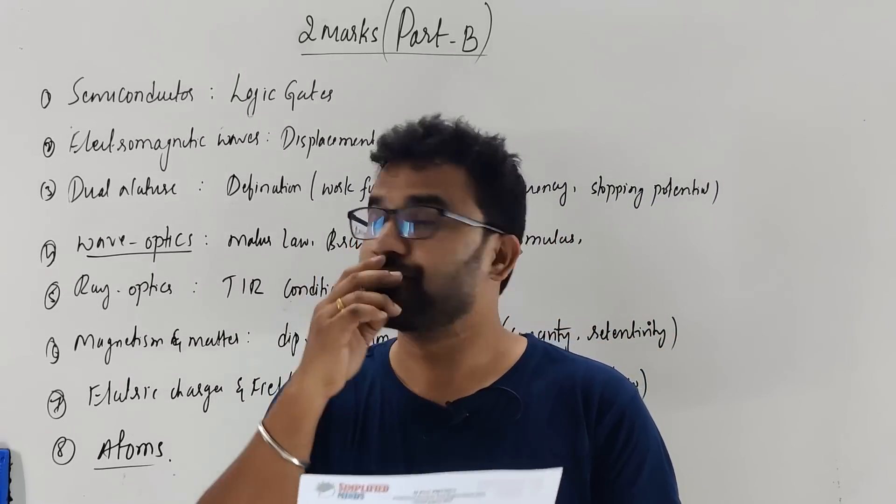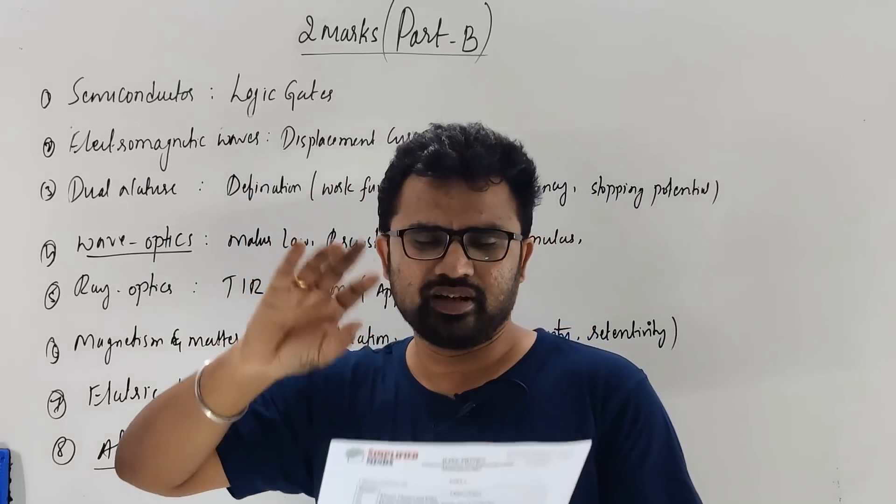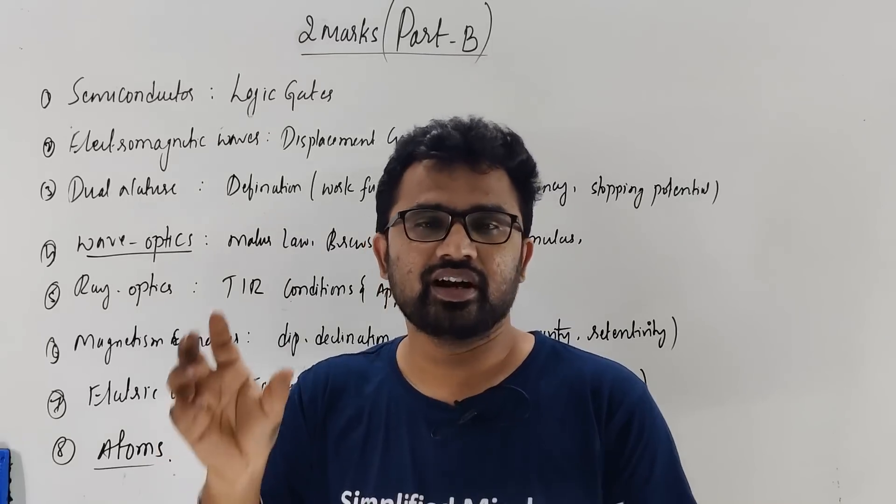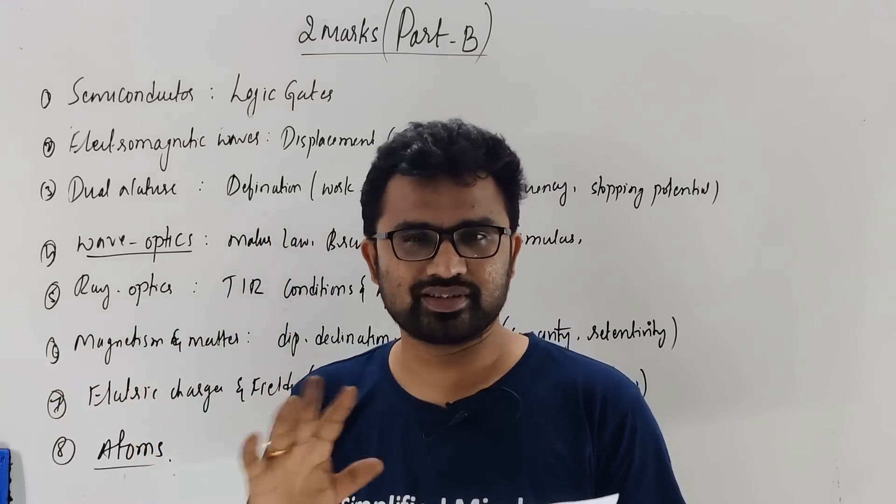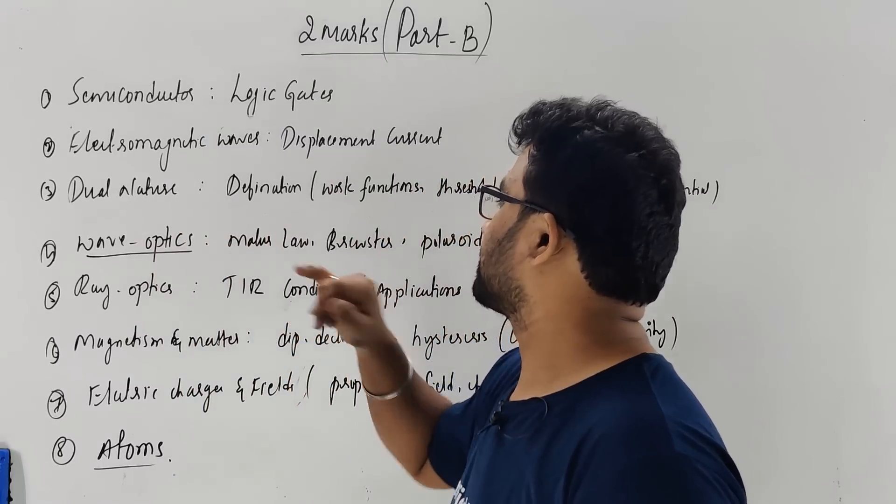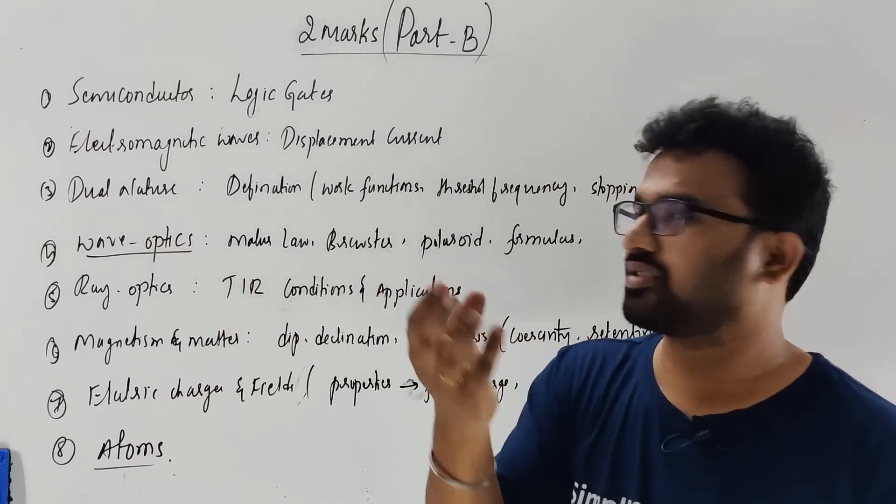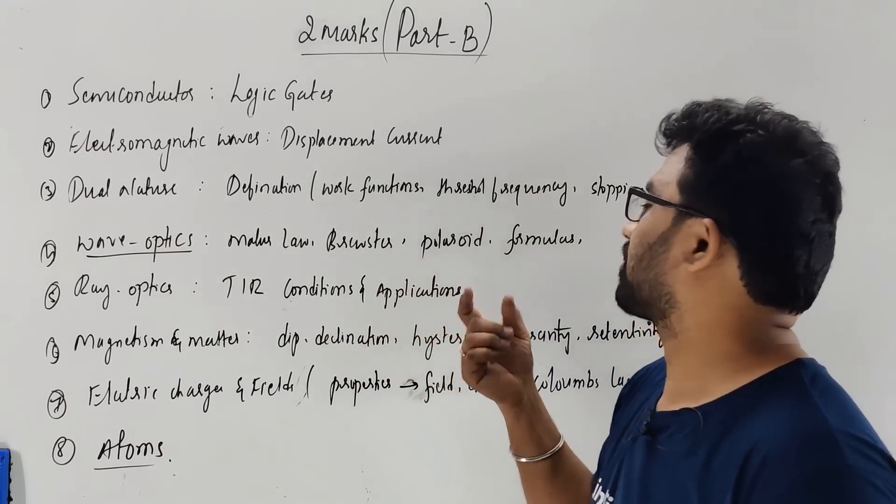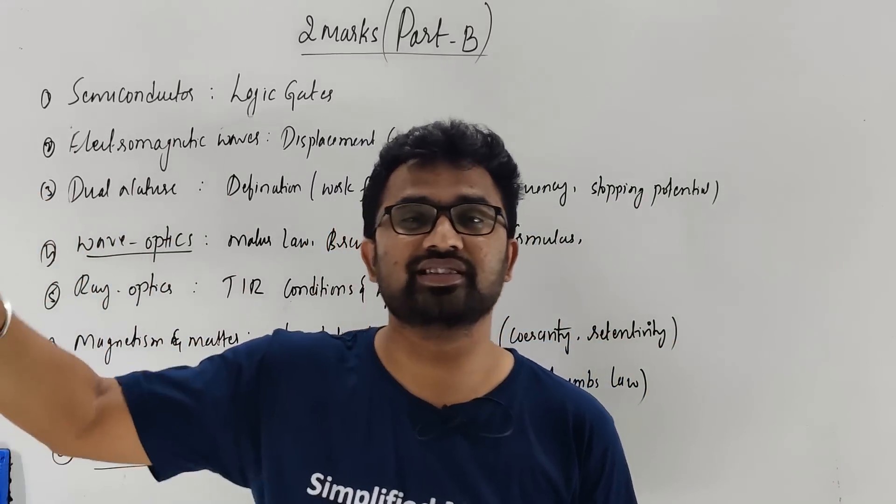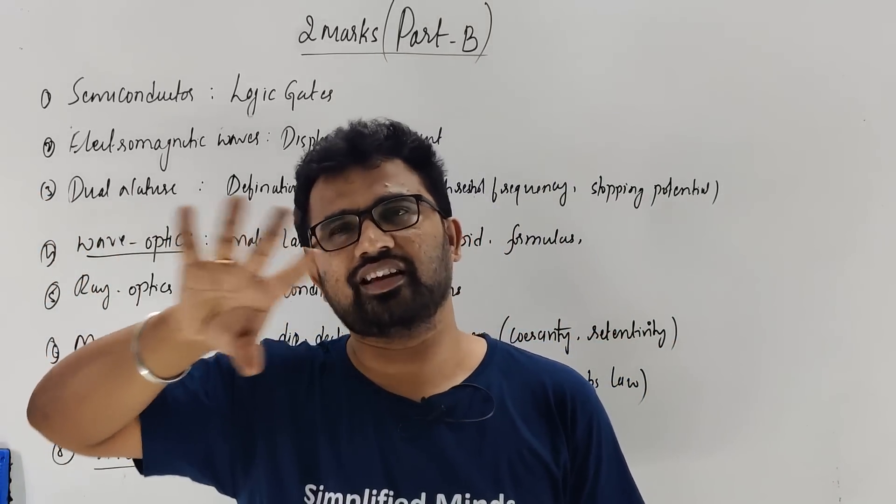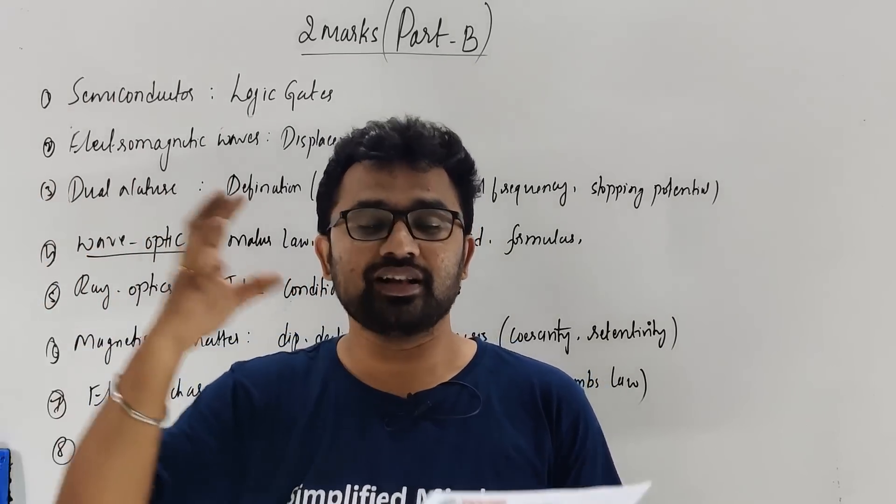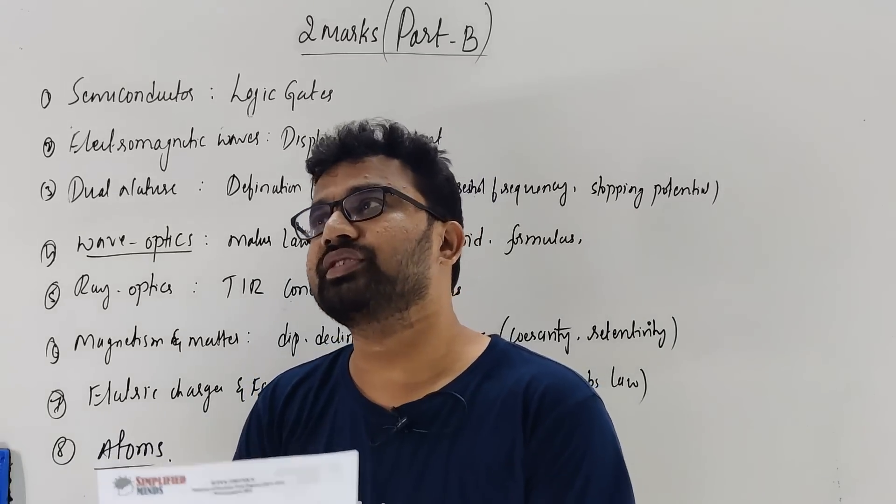Next, electromagnetic waves. Properties of displacement current—by repeat. It's a single topic: displacement current. Other definitions and formulas. Dual nature of radiation—again, same definition but just a definition. Work function and threshold frequency, total operation. Also, dual nature of radiation—you'll be studying photoelectric effect, Einstein's equation. This is the four-mark topic. Dual nature: two marks, four marks, or five marks. Modern physics topics are there.